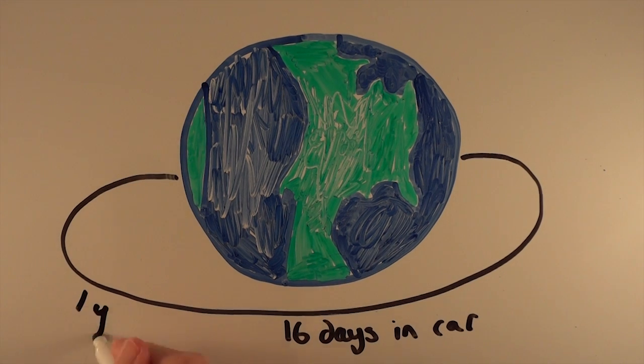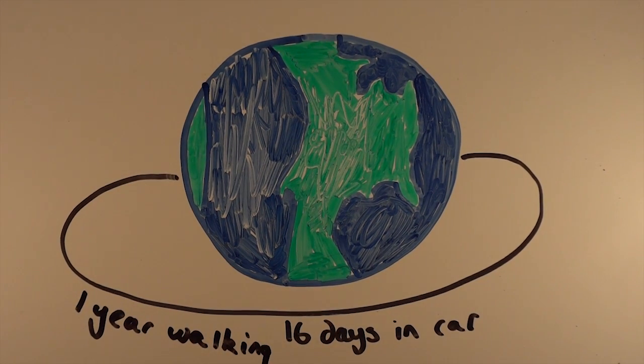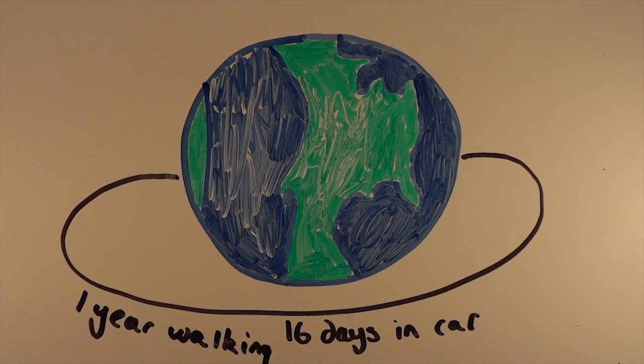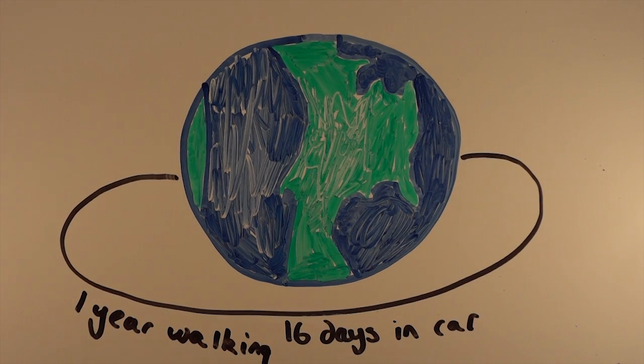It would take you about 350 days, or just under a year, to walk right around Earth, assuming you never took a break and could walk in a straight line around Earth.